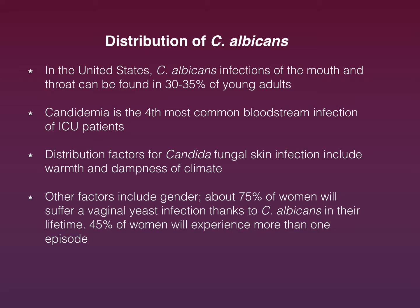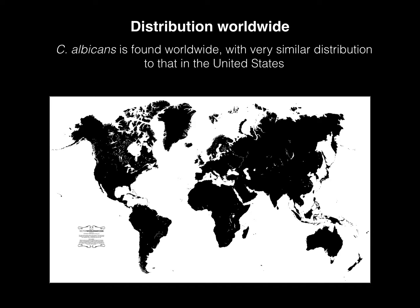In the United States, Candida albicans infections of the mouth and throat are found in 30 to 35 percent of young adults. Candidemia is the fourth most common bloodstream infection in intensive care unit patients. Distribution factors for fungal skin infection include warmth and dampness of climate, and gender. About 75 percent of women will suffer a vaginal yeast infection in their lifetime, and 45 percent will experience more than one episode. The distribution of Candida albicans is found worldwide, with the U.S. distribution very similar to the rest of the world.